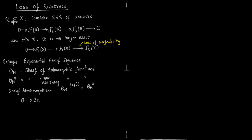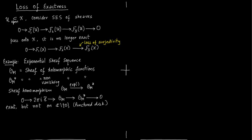We have an exact sequence on small sets — if you take small sets, the sequence will be exact. But if you take the entire space as the punctured disk, that is the complex plane minus zero, then there is a loss of surjectivity from O_M to O_M*. So this map O_M → O_M* is no longer surjective on the entire space ℂ minus the origin.